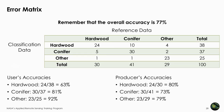The user's and producer's accuracies give you a better indication of which classes have the greatest errors. Although the overall accuracy is 77%, the user's accuracy for hardwood is only 63% and the producer's accuracy for conifer is 73%, while all other accuracies are higher. This means that in your classified map, you've overestimated the amount of hardwood pixels and underestimated the amount of conifer pixels — there's probably a lot of confusion between hardwood and conifer pixels.